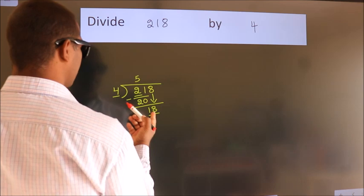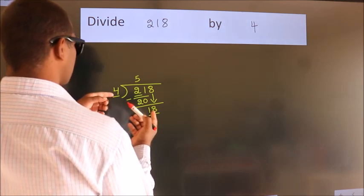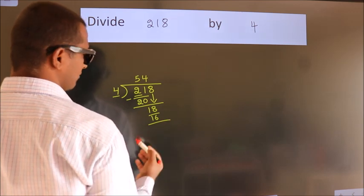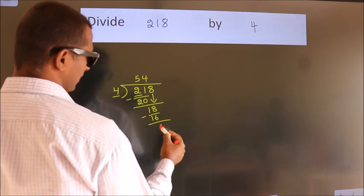A number close to 18 in 4 table is 4 fives 16. Now we subtract. We get 2.